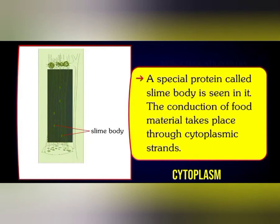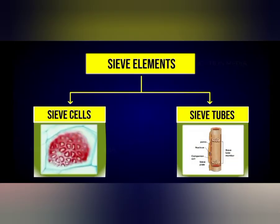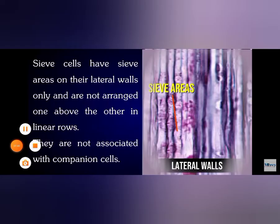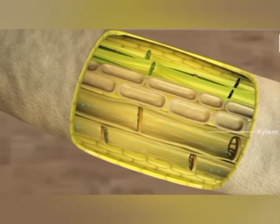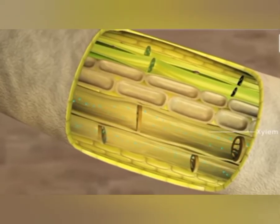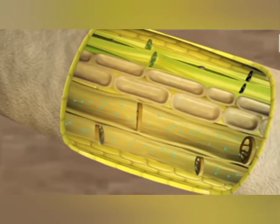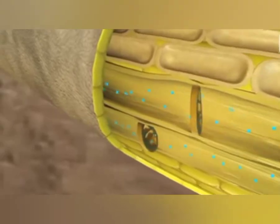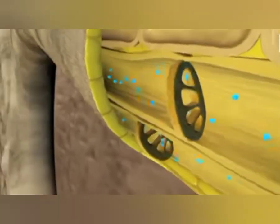In a sieve tube there will not be any nucleus, but cytoplasm is present. All the members of phloem are living cells, whereas in xylem, all are dead except xylem parenchyma. So sieve tubes will occasionally have sieve cells which act as filters.